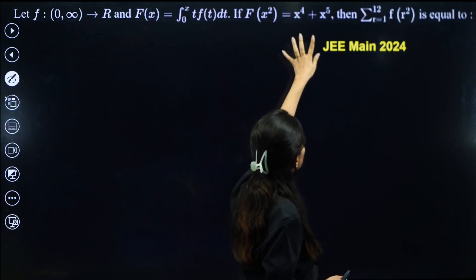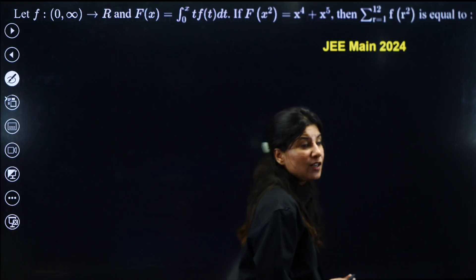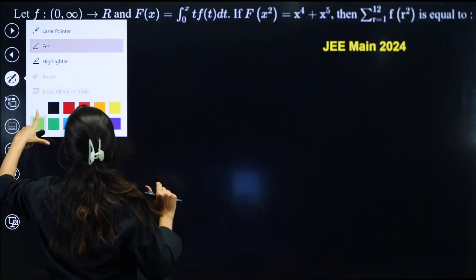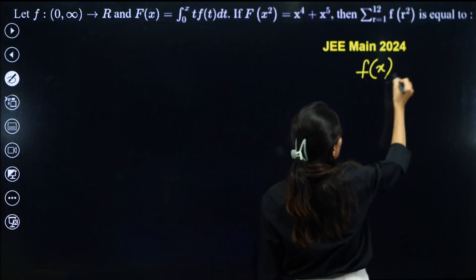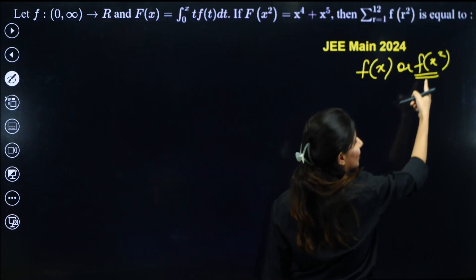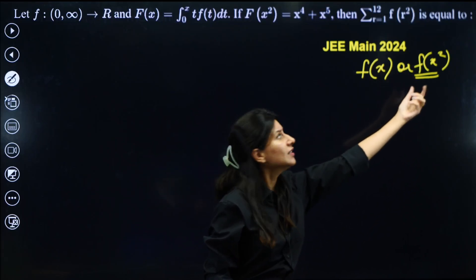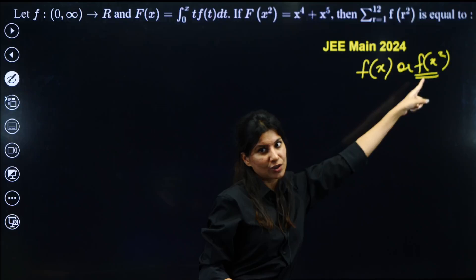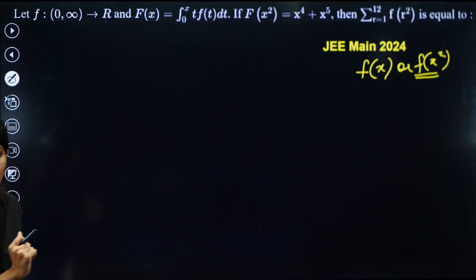And f(x)^2 is also given. What we are looking for is sigma of f(r)^2. So the agenda, the end goal of this question, is to calculate f(x) or rather f(x)^2. This is the final goal. Even if we calculate f(x), it's fine. But either of these two, this is the better approach if we are getting this.